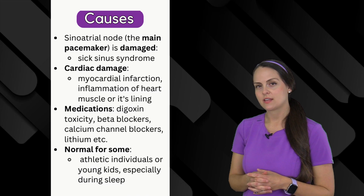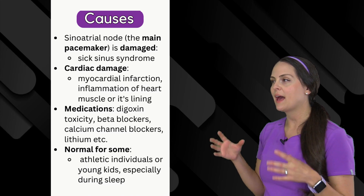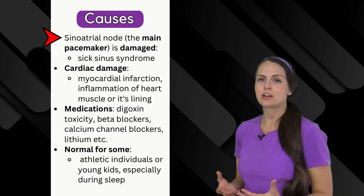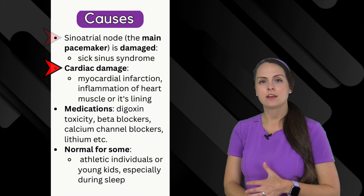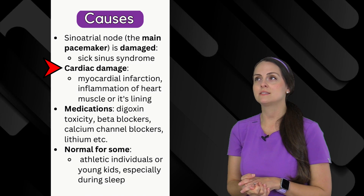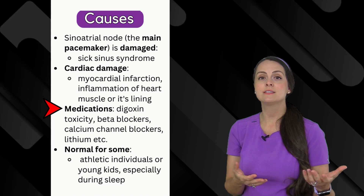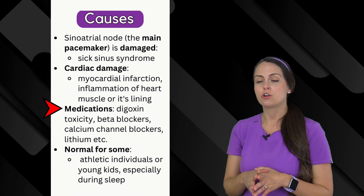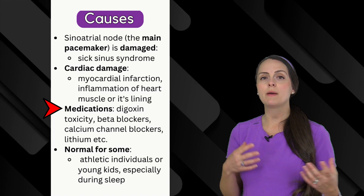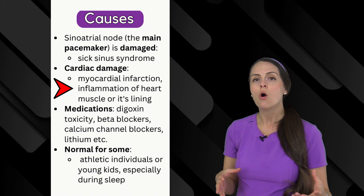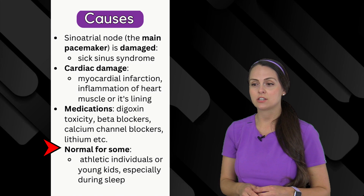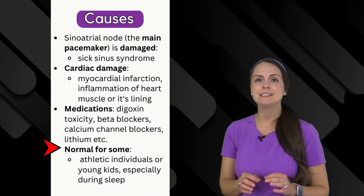What are some causes of junctional escape rhythm? Think about the pathophysiology — we have damage to the SA node. Conditions that can cause this include ischemia to the SA node, such as through a myocardial infarction. Patients with sick sinus syndrome can develop this, as can patients taking medications that affect the node — digoxin toxicity, beta blockers, calcium channel blockers, or lithium. Inflammation of the myocardium or the lining of the heart can also cause it. One thing to remember is that this can actually be normal in some patients, such as athletic or young individuals, particularly during sleep.